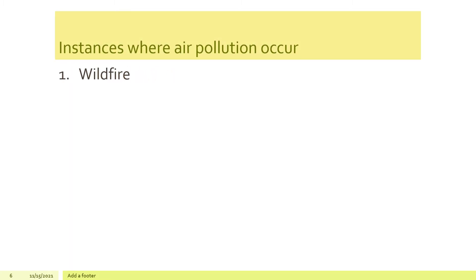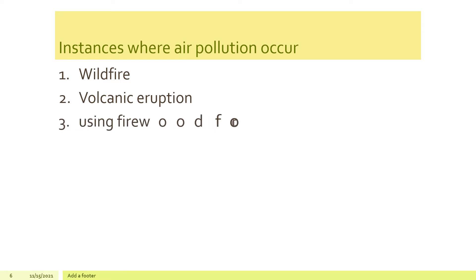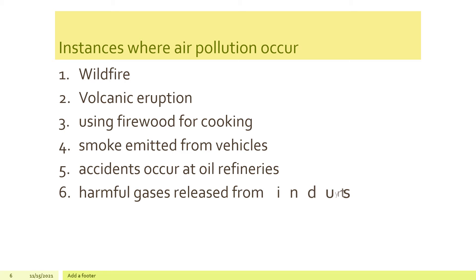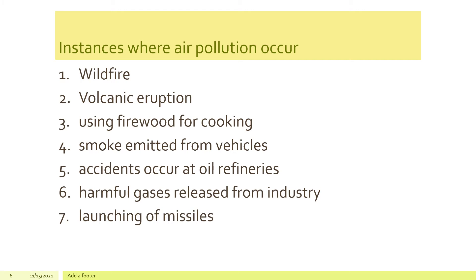Let's talk about the instances where air pollution occurs: wild fire, volcanic eruptions, using firewood for cooking, smoke emitted from vehicles. Accidents occur at oil refineries which release poisonous gases to the atmosphere. Harmful gases released from industries, especially gases containing sulfur, and launching missiles and war events.